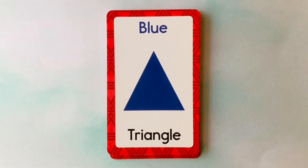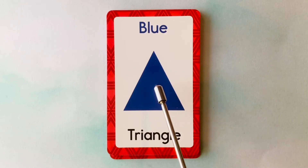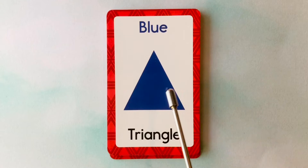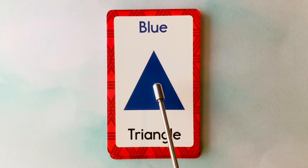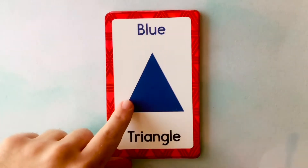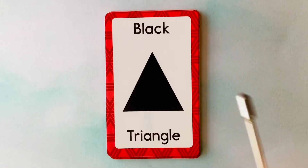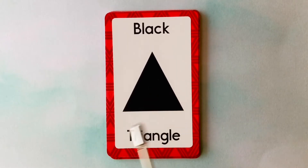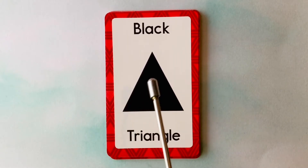Let's learn shapes and colors. This is a triangle. What color is this triangle? It's a blue triangle. This is a blue triangle. This is also a triangle. What color is this triangle? It's a black triangle. This is a black triangle.